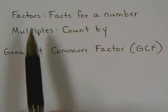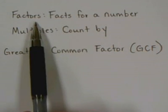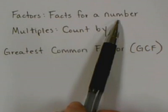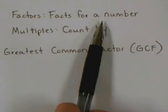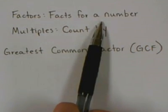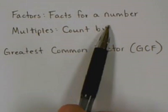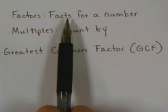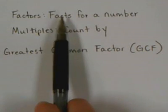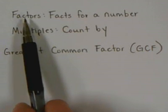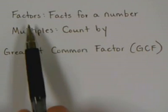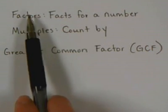First, I always tell my students that they need to think for factors, facts for a number. So what we do is I say factors and they say facts for a number. The more they say it, the more they associate multiplication facts with factors because they have a really hard time keeping multiples and factors separated.